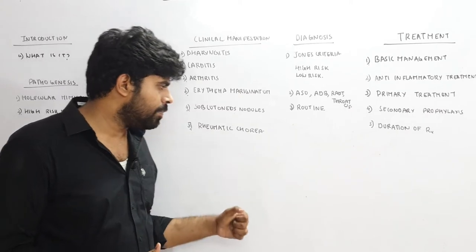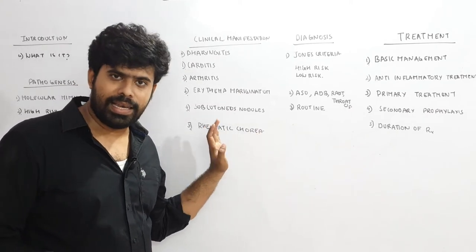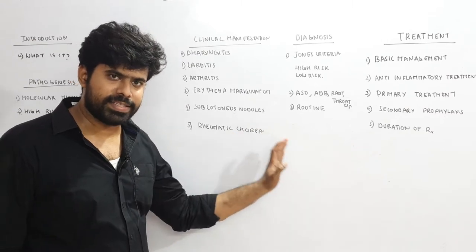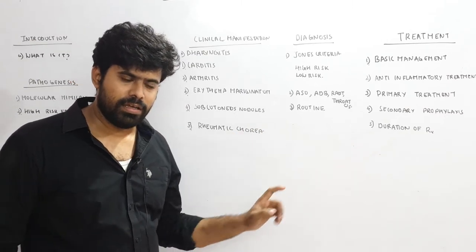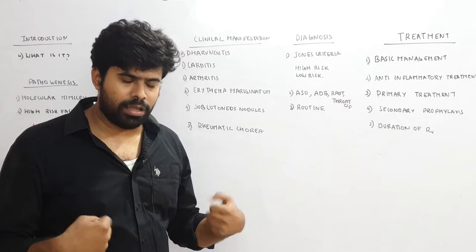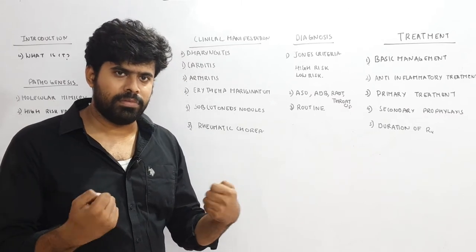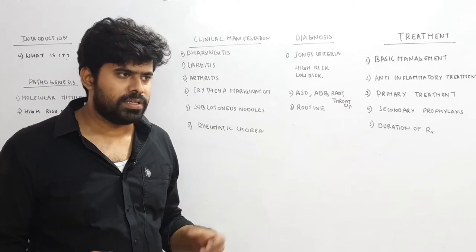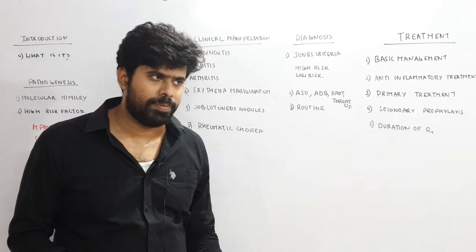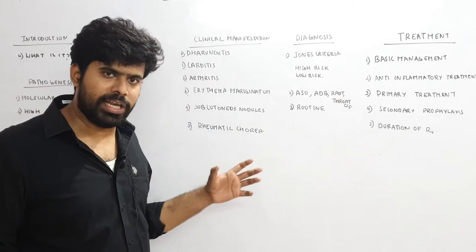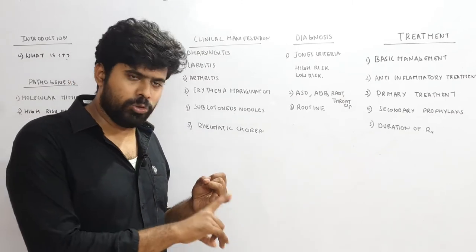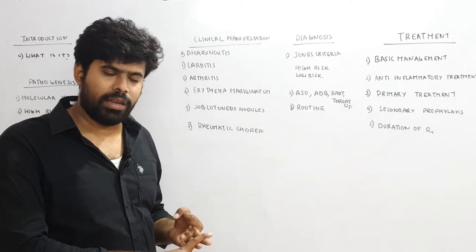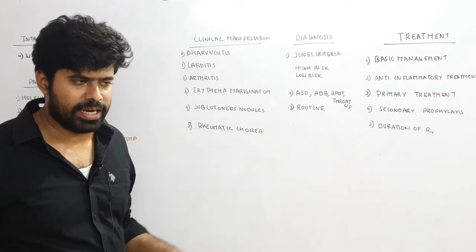Rheumatic chorea is a late manifestation of acute rheumatic fever, also called Sydenham's dance. It is characterized by a triad: irregular involuntary movements of the upper limbs, face, and feet; muscle weakness and muscle hypotonia; and emotional lability. So the triad is emotional lability, muscle weakness, and involuntary movements.